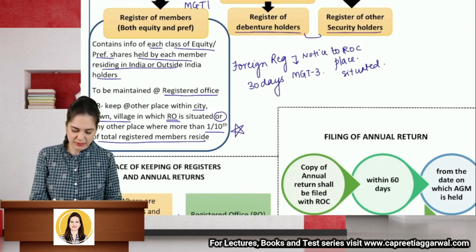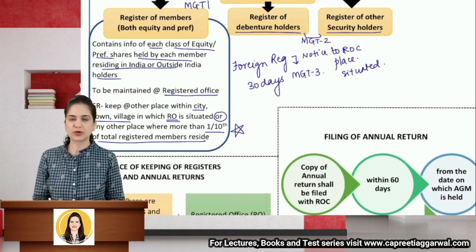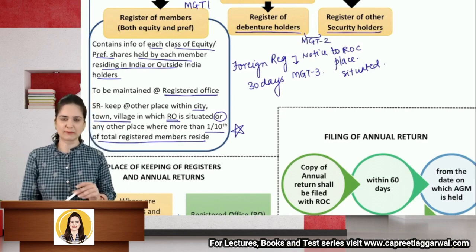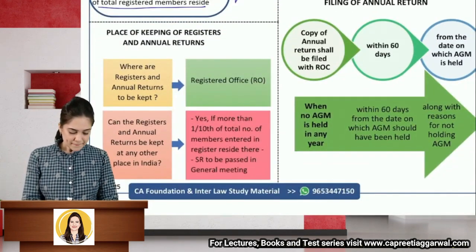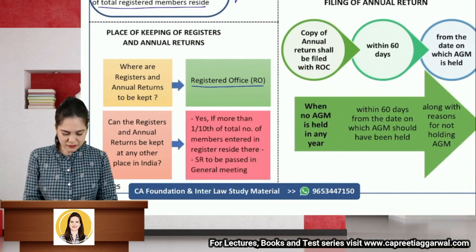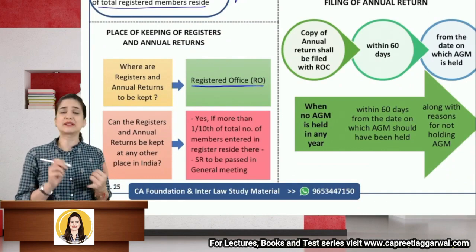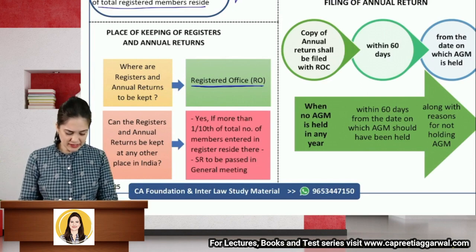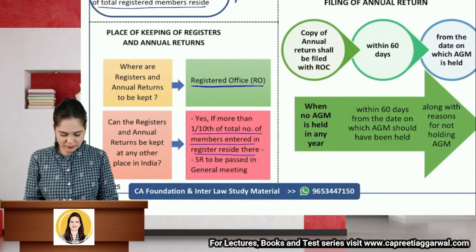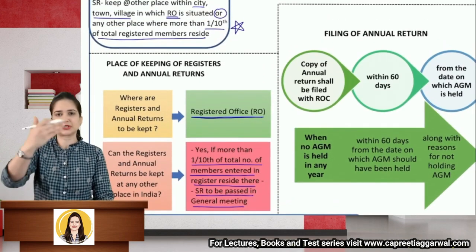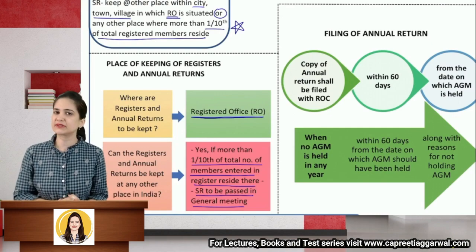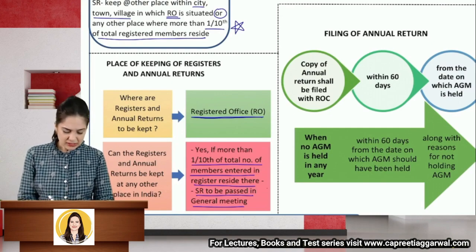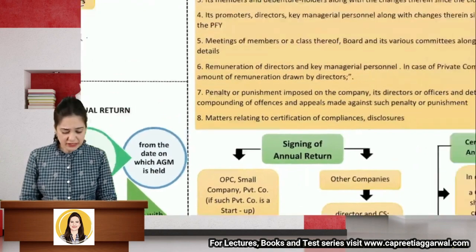Registers and the annual return are kept at the registered office. They can be kept at another place only by passing a special resolution in a general meeting, if more than one-tenth of the total members entered in the register reside there. This is important for case-based questions.